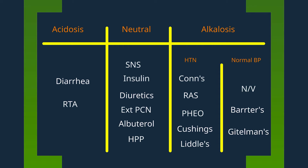Under our acidotic causes of hypokalemia, diarrhea is one cause. The other cause is renal tubular acidosis, which can be further divided into distal RTA and proximal RTA. Distal RTA is commonly associated with Sjogren's syndrome, and proximal RTA is commonly associated with multiple myeloma.